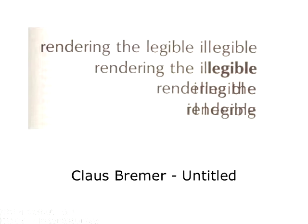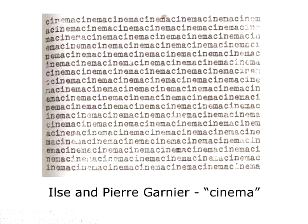Concrete poetry plays upon these expectations, but it itself takes nothing for granted. Among examples of this taking nothing for granted, Draper notes that the spacing between words may be erased, as in Ilse and Pierre Garnier's cinema shown here. Similarly, line spacing may be eliminated, or we may witness the systematic emergence of a single word, or even of a single letter.